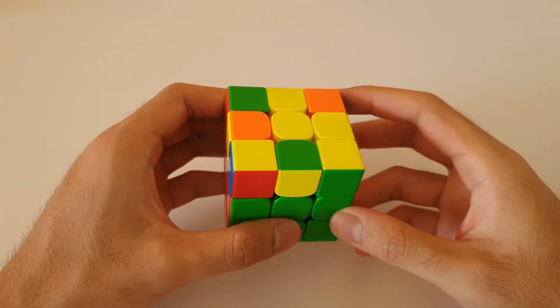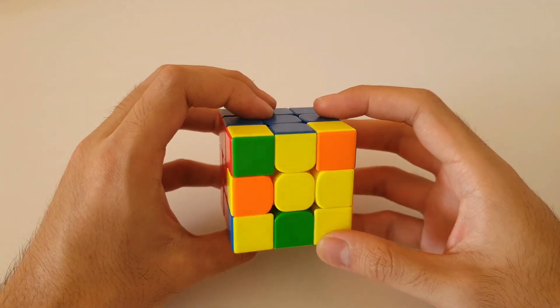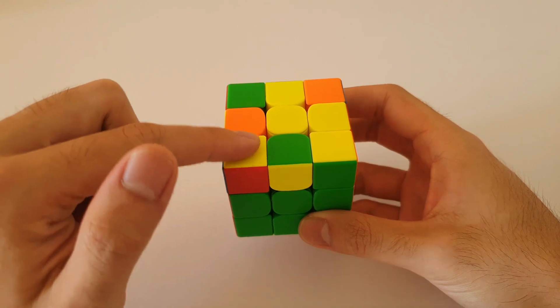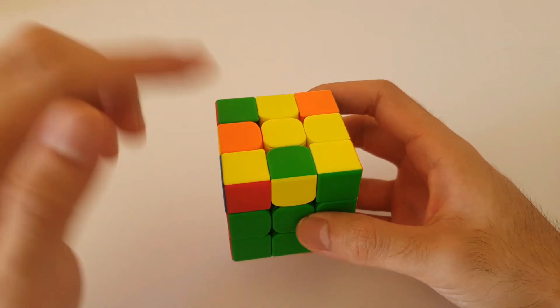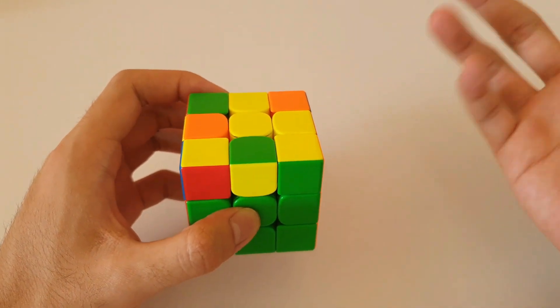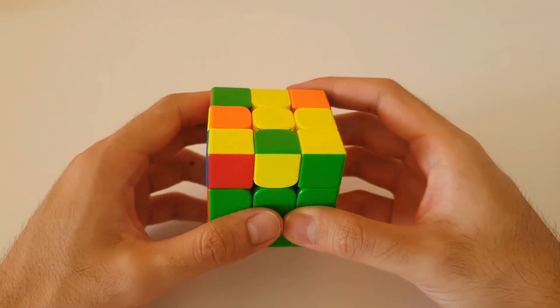Alright, so moving on to the mirror version of that previous case. So once again, headlights at the back. The single yellow corner is now on the front left which reminds us that this is the left-handed algorithm. So it's very similar as the name suggests, left-handed algorithm.